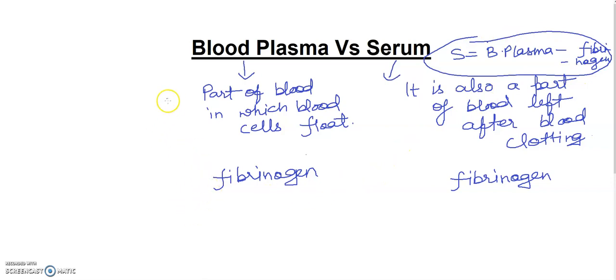अगले point पे आते हैं हम लोग. This was point one, this is point two. Point three discuss करते हैं: it can clot. Plasma clot भी कर सकता है. It can clot. और आप यहां के लिखेंगे, यहां point लिख सकते हैं: it cannot clot.